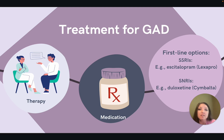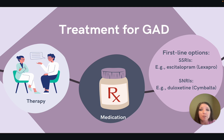Once the diagnosis of generalized anxiety disorder is made, you'll want to discuss treatment options. We always want to practice shared decision-making because the best treatment options are going to be the ones that the patients are comfortable with. Generally speaking, treatment should include psychotherapy and/or medications. Cognitive behavioral therapy is recognized as the preferred psychotherapy for patients experiencing generalized anxiety disorder.